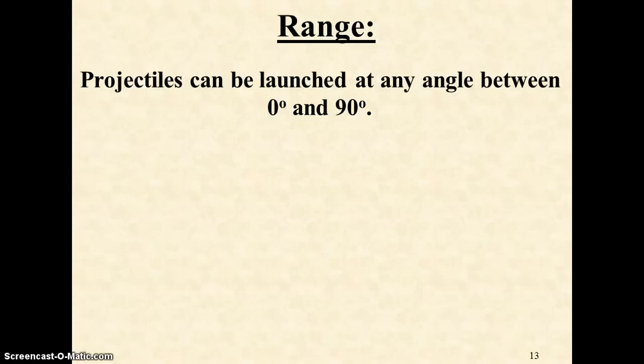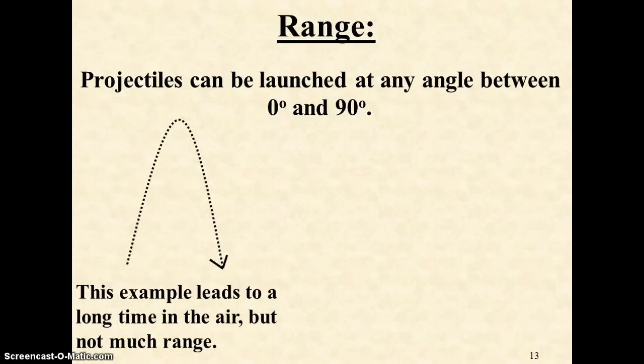The term range deals with how far an object moves forward in the X direction. You could have something launched very high up into the air or very low. Those would be different angles of launch.